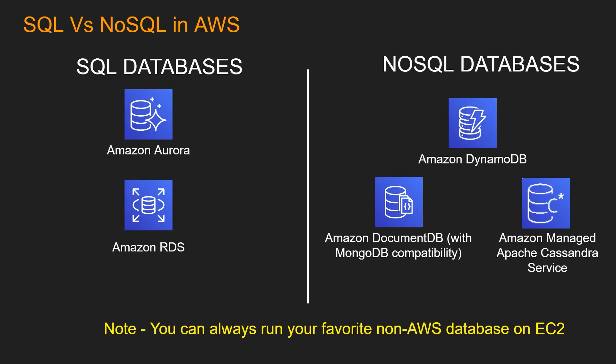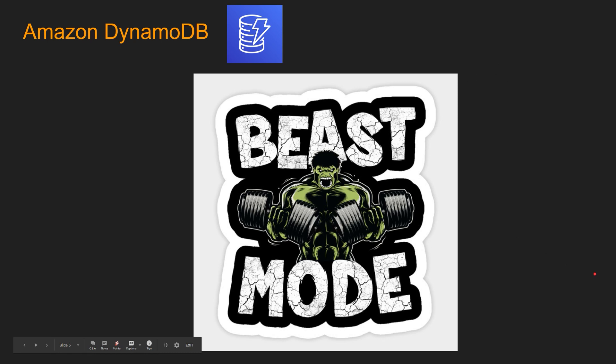Let's take a look at SQL and NoSQL databases in AWS. Under SQL databases, we have Amazon Aurora and Amazon RDS. For NoSQL, we have Amazon DynamoDB, Amazon DocumentDB with MongoDB capability, and Amazon Managed Apache Cassandra Service. One thing to note: you can always run your favorite non-AWS database on EC2, however, if you can, you should always use one of the AWS native databases. Now let's look at Amazon Aurora versus Amazon DynamoDB.